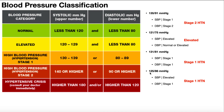Next blood pressure: 125 over 86. The systolic 125 is in the elevated category, and the diastolic 86 is in the stage one category. Could this be elevated? No — for elevated, you have to satisfy both conditions: the systolic between 120 and 129 and the diastolic less than 80. Since the diastolic is in the stage one category, this is stage one hypertension.